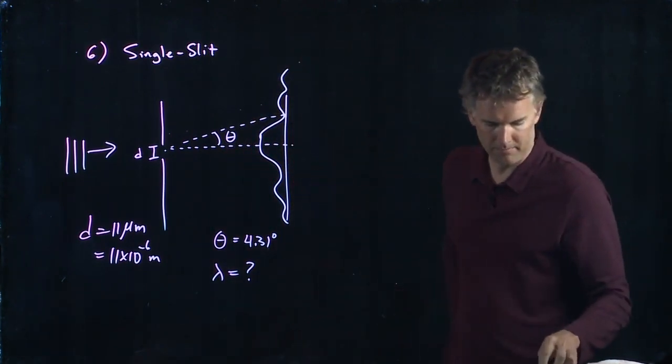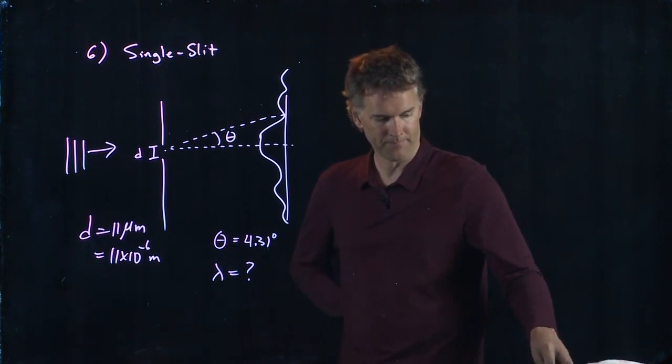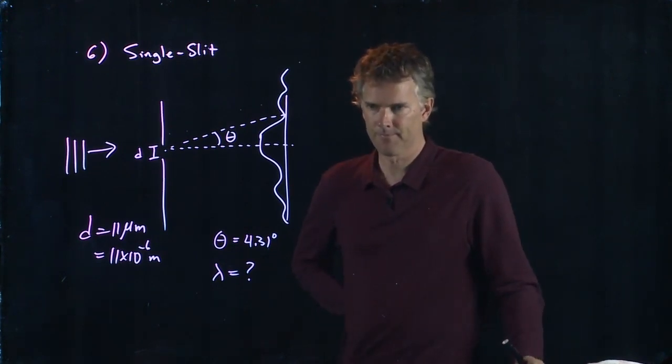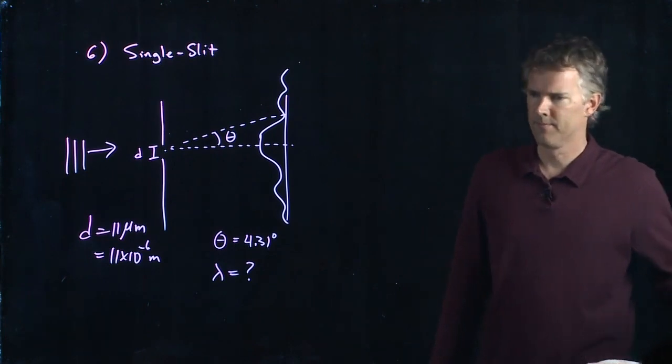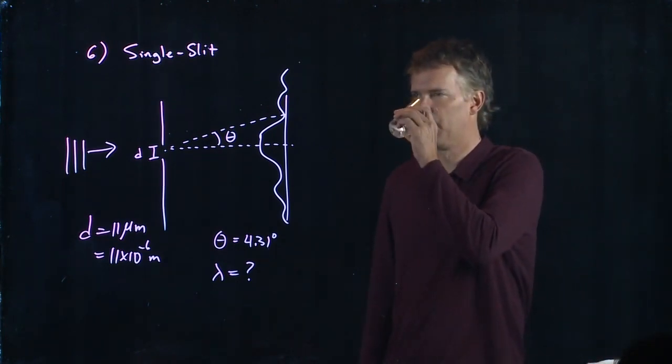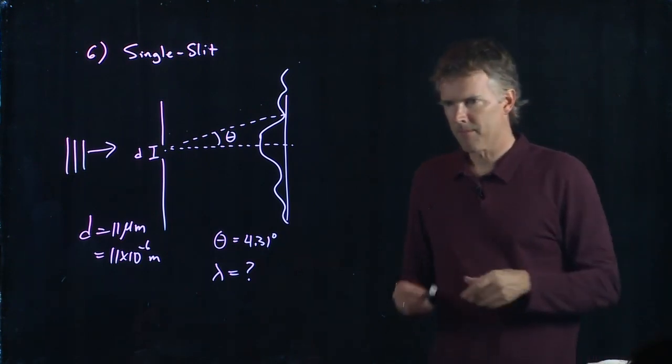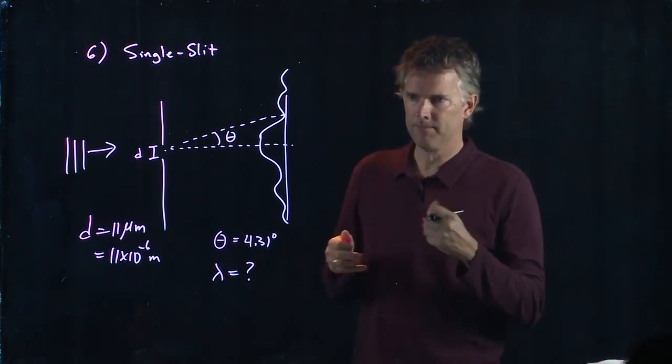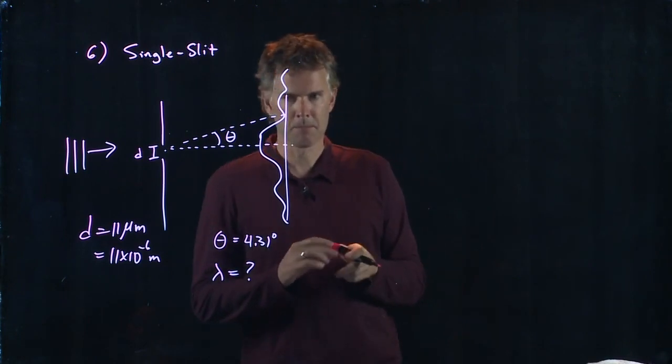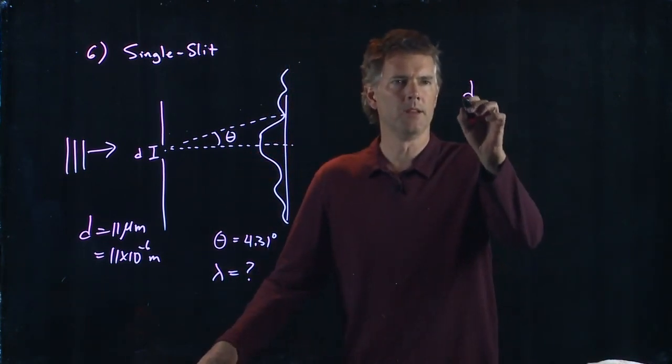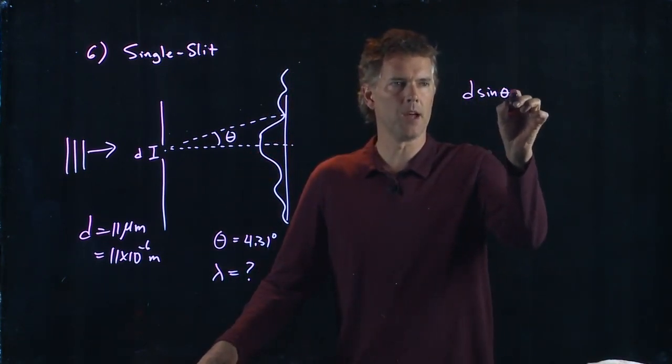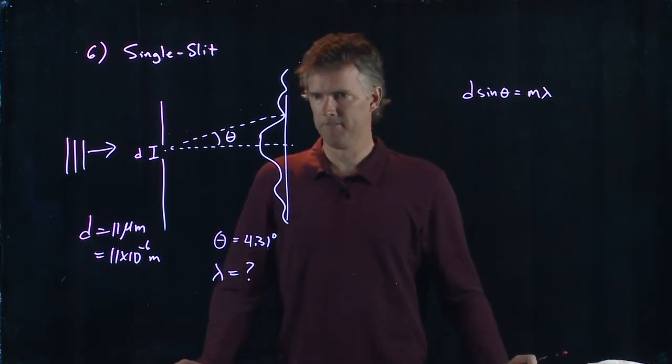So how do we do this? Somebody give me some thoughts. Jessica, what should we do? D sine theta equals M times lambda. So where did that come from?